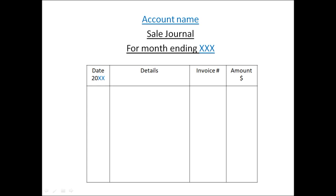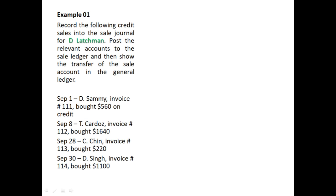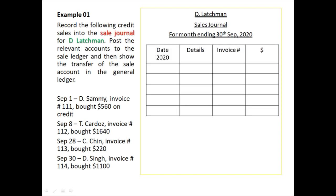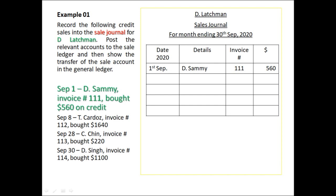Now that we've established that the sales journal records credit sales — selling goods without money being transferred but promised at a later date — and we know the format, we can begin. This account is being prepared for D. Latchman, so we place the heading: D. Latchman, Sales Journal, for month ending 30th September 2020. Then we draw up the format with columns: date, detail, invoice number, and amount.